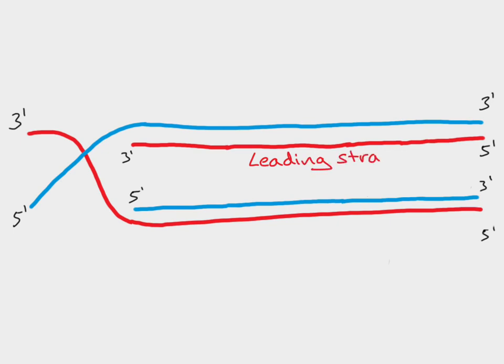The strand that works without the Okazaki fragments is known as the leading strand. And the new strand that's made using Okazaki fragments is known as the lagging strand.